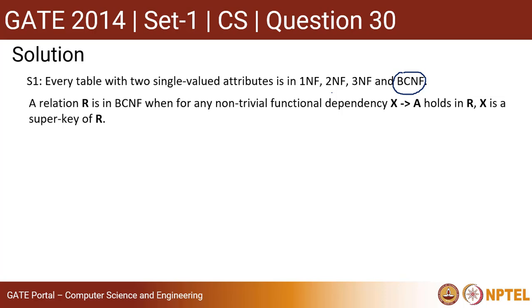So that's basically check for everything here. A relation R is in BCNF when any non-trivial functional dependency X determines A holds in R, X is a super key of R.